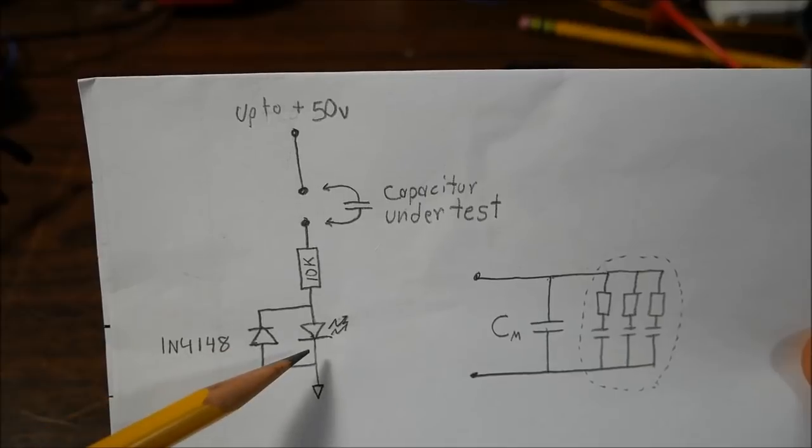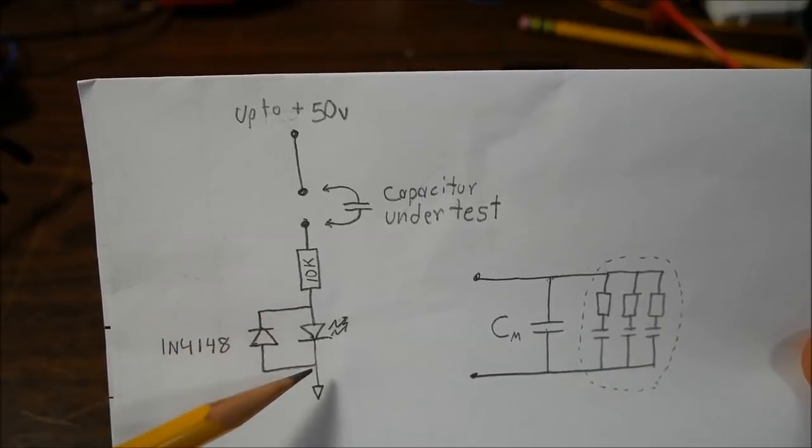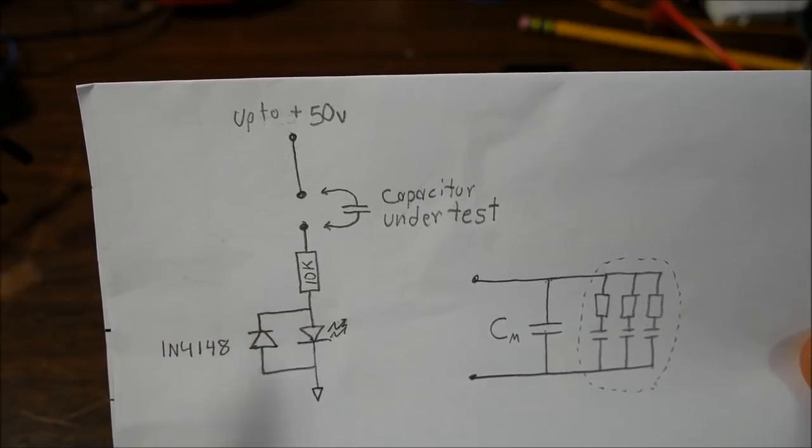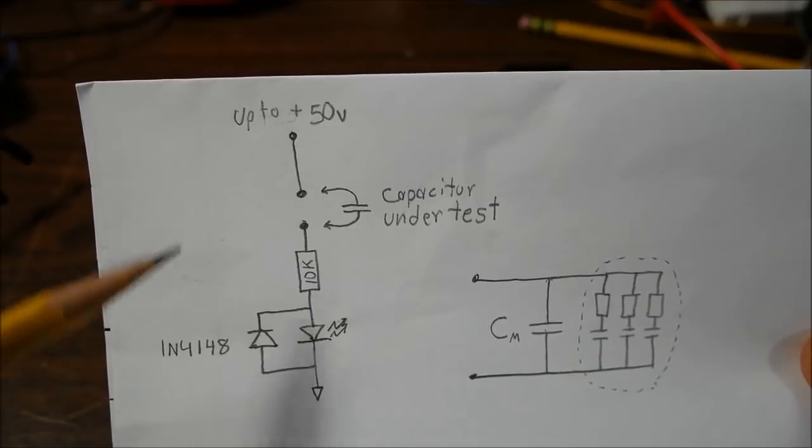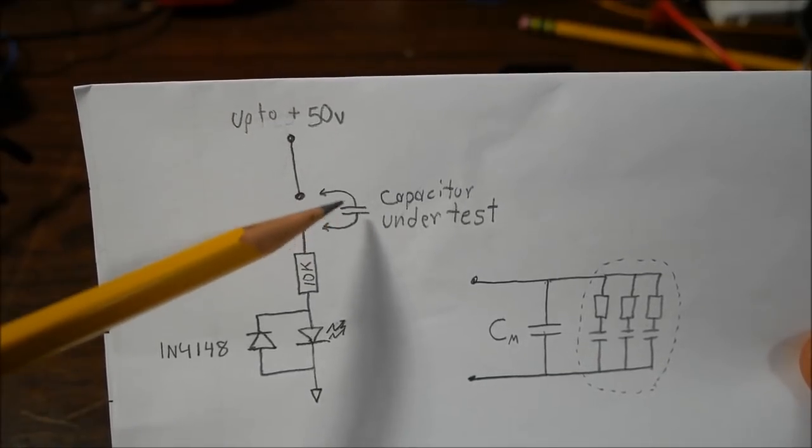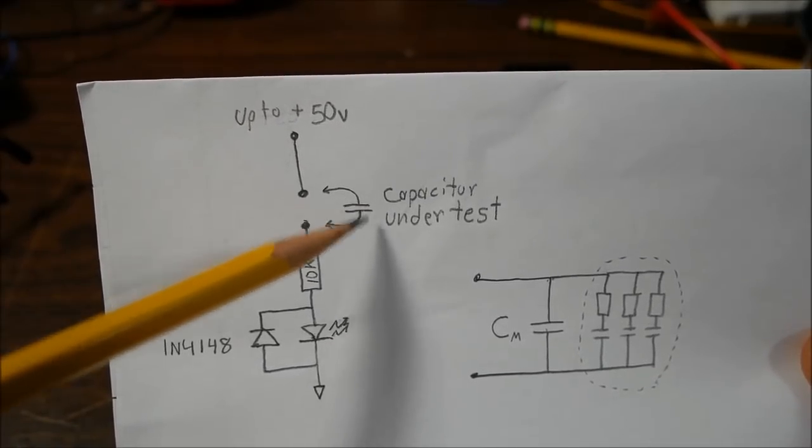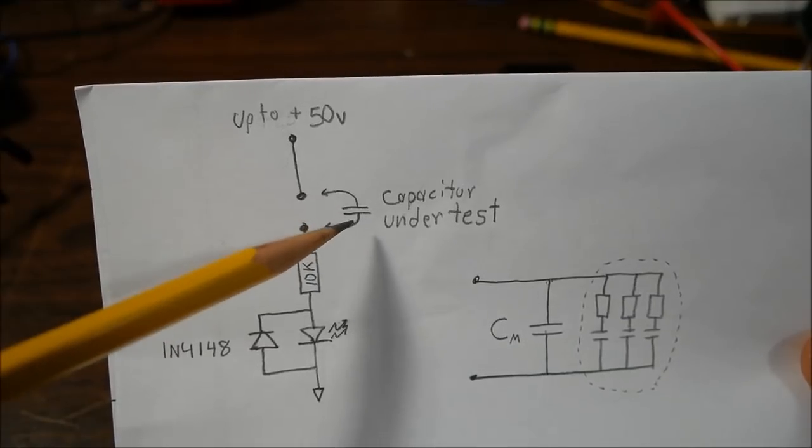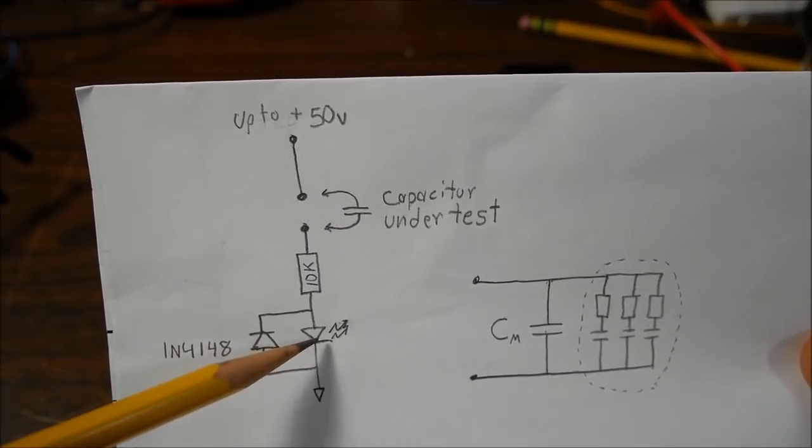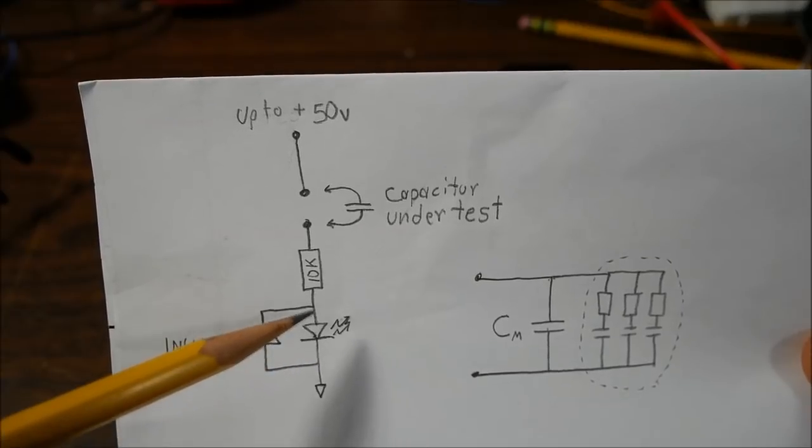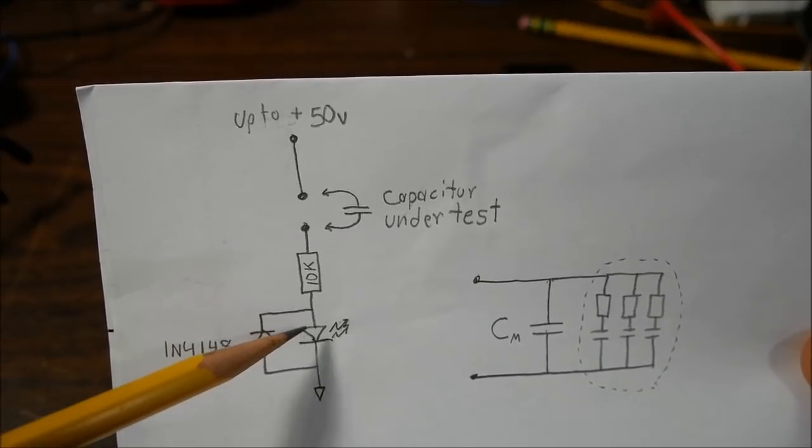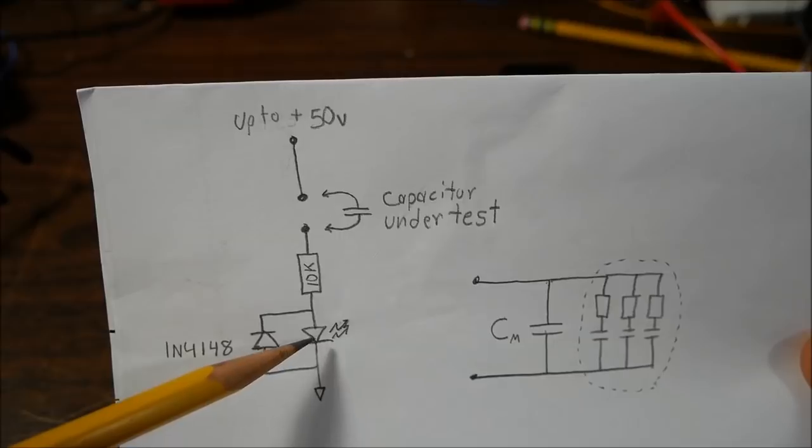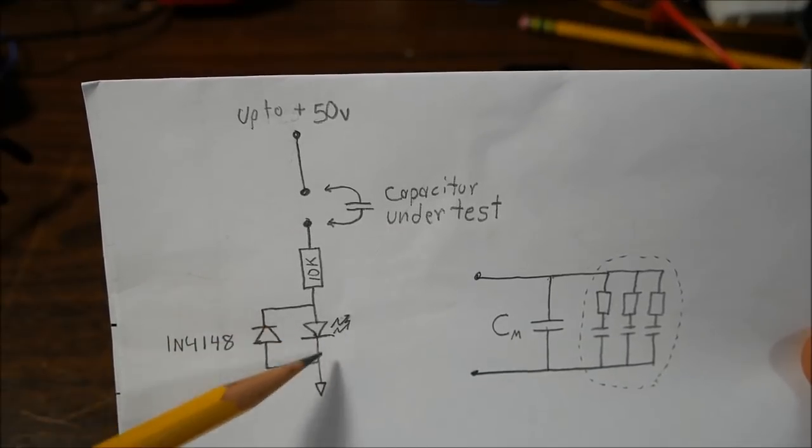Now this diode connected across the LED in anti-parallel is just protection. For example, let's say you hook up a capacitor and it has a charge on it and it reverse biases this LED. Well, you're not really supposed to put much of a voltage in reverse bias. Normally, up to 5 volts.